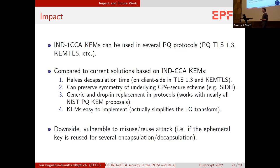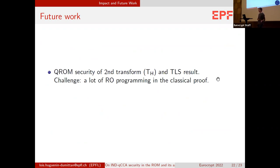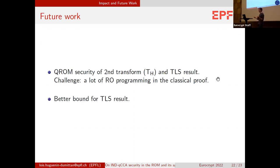The main downside is that an IND-QCCA KEM can be vulnerable to misuse or key-reuse attacks. If you reuse an ephemeral key multiple times, after a few thousand reuses an adversary can recover the secret key, as shown in many other works. We have to be careful when implementing protocols that ephemeral keys are really used only once. As future work, it would be nice to prove the QROM security of the second transform and of the TLS result. The challenge is that there is a lot of random oracle programming in the classical proof, which may not be easy to transpose to the quantum setting. For the TLS result there are also many nested random oracles. My best guess is that it would hold, but perhaps with a worse security bound. It would also be good to get a tighter bound for the TLS result.